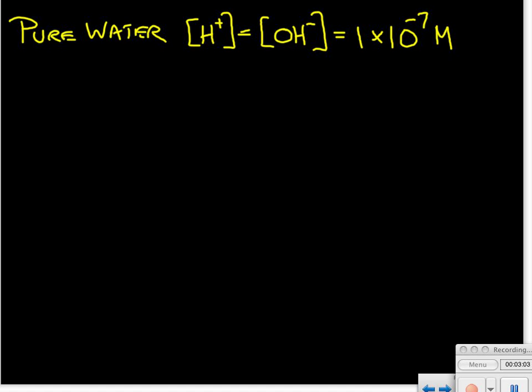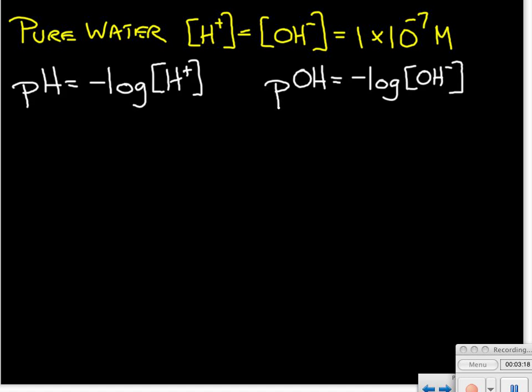Chemists said it's kind of a pain to work with all these really small numbers in scientific notation, so they came up with a definition for pH and pOH. They defined the pH as the negative log of the concentration of the hydrogen ion, and the pOH is the negative log of the hydroxide ion concentration. The reason for the negative sign is just to change the sign — because these concentrations are generally less than 1, their exponents are negative, and taking the log gives a negative number. Chemists didn't want to deal with negative numbers either, so they made these nice, fairly low numbers without a negative sign by just changing the sign.